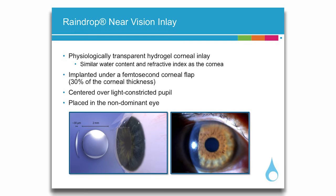It is implanted under a femtosecond corneal flap that is created at 30% of the total corneal thickness. The inlay is centered over the light-constricted pupil, and there are no special tools or equipment needed for centering. It is placed in the non-dominant eye only.